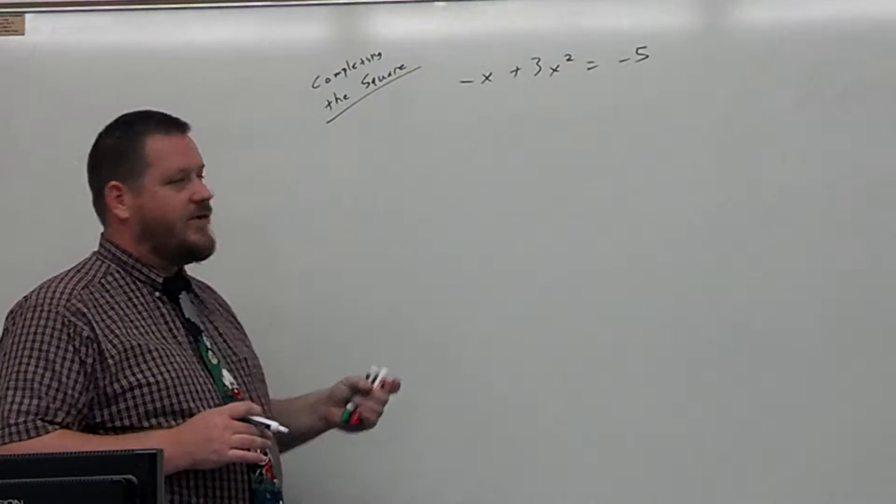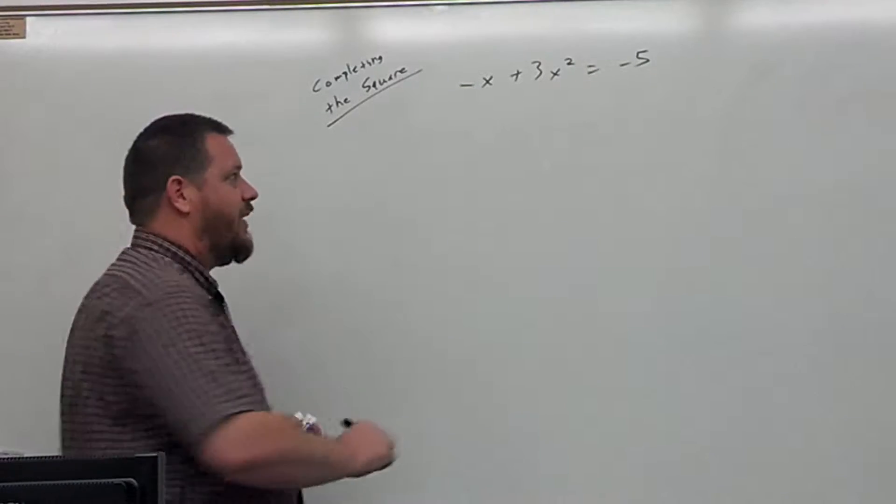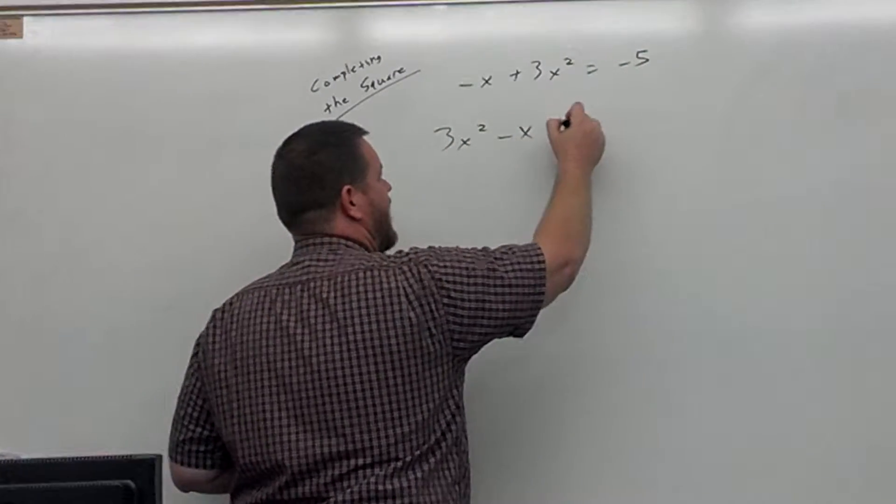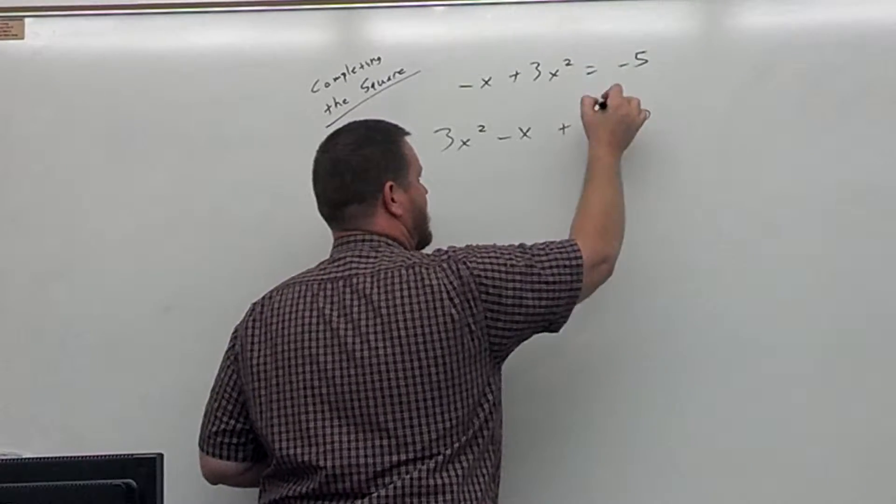First thing we want to do is rearrange everything in descending order of the power of the variable. We want our x squared term first, and then our x term, and then the number equals 0.